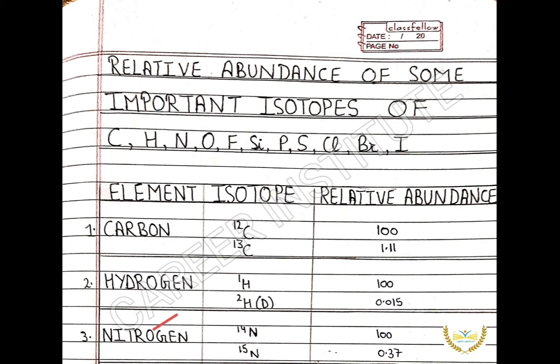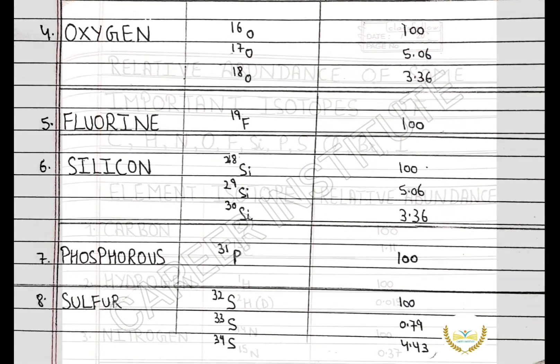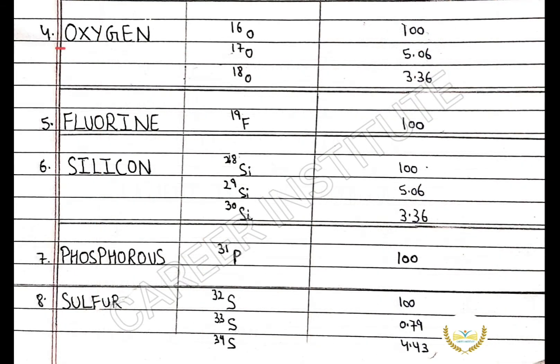The next element is nitrogen. Nitrogen-14 has the relative abundance of 100%. Nitrogen-15 has the relative abundance of 0.37%.